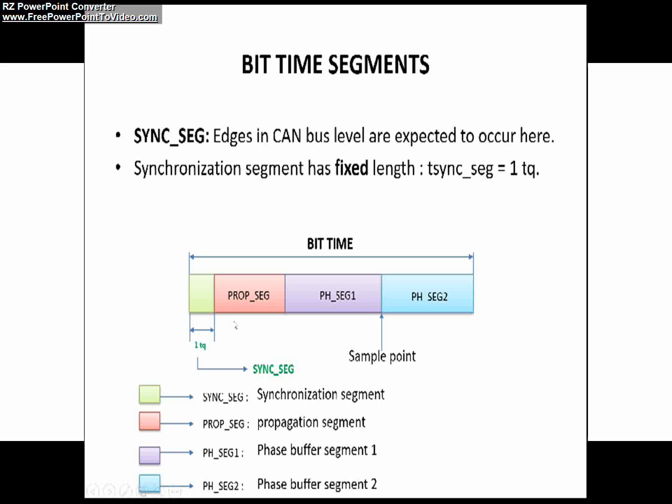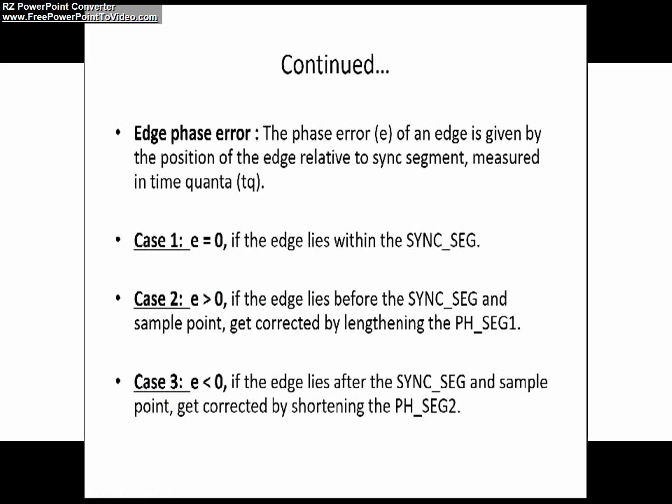It leads to an error in a CAN network. That error is called an edge phase error and it is denoted by E in a CAN network. Now you may ask, what is edge phase error?